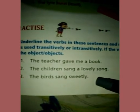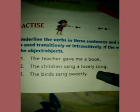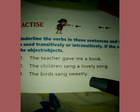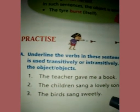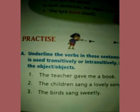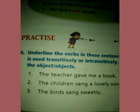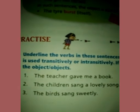The bird sang sweetly — ismein koi object nahi hai, so this is called an intransitive verb. I hope you all understood. Now do the practice of the exercise.